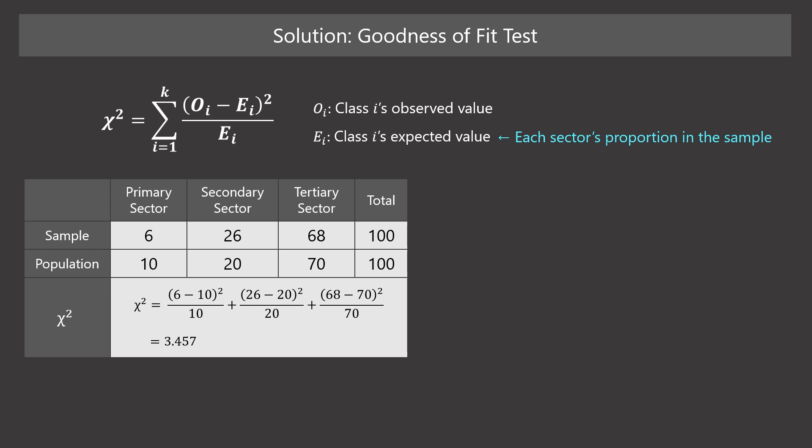The formula of Chi-Squared contains expected value, which is the weighted average of an experiment. Here, the expected value is the proportion of each sector in the population. To calculate Chi-Squared, first compute the difference between the expected value and observed value, and divide it by the expected value. Then aggregate them. The result is the Chi-Squared value: 3.457.